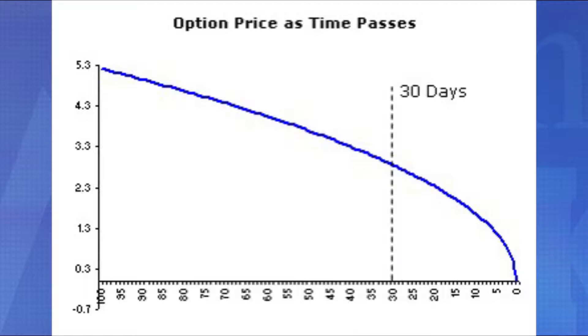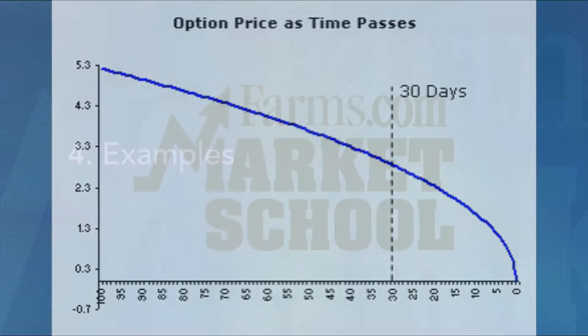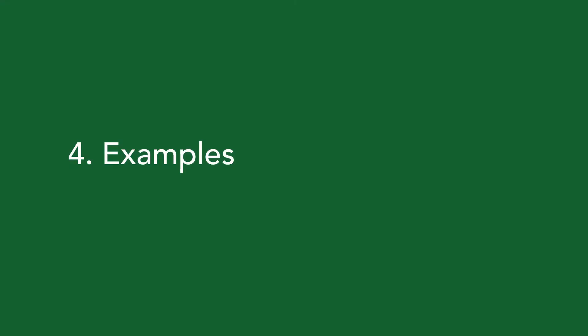Time value is an option's worst enemy. Time value erodes over time, with the worst erosion occurring as that option gets to expiry within that last month or so. Our fourth topic today is using examples to explain hedging with options.